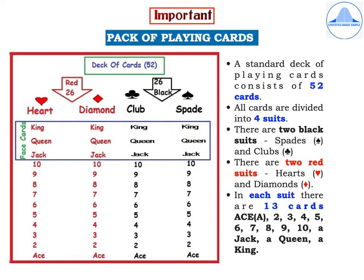You have the Ace, denoted by A, then 2, 3, 4, 5, 6, 7, 8, 9, 10, then a Jack, a Queen, and a King.